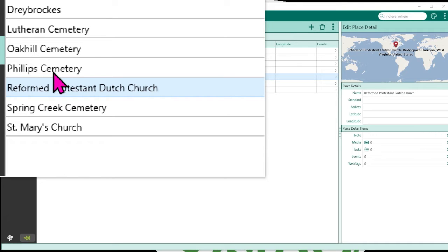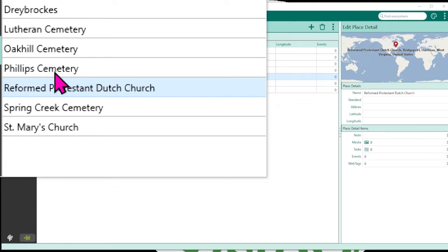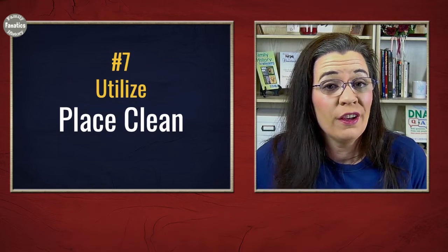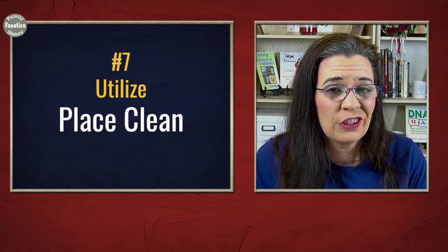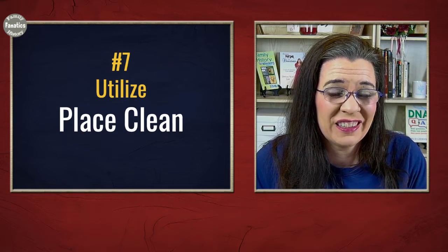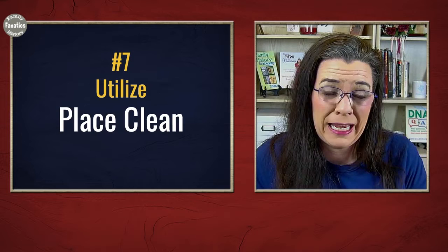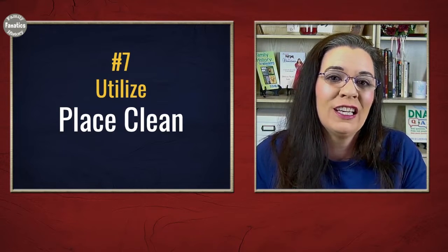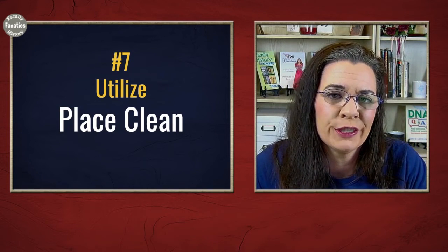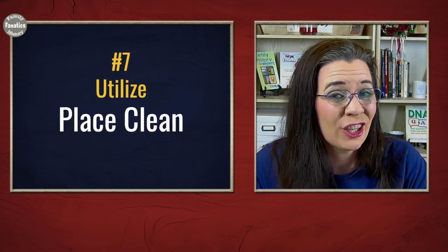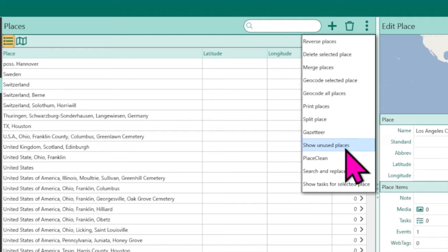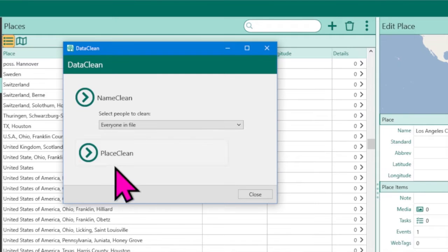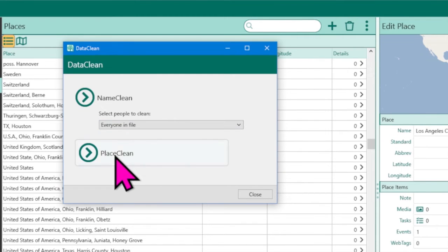If that went too fast, be sure to use the speed controls on YouTube to slow it down. While those tips are good to know when you just have a handful of things to clean up, there is one tool that can help you overhaul the mess you created in your locations in your family tree. It's called the Place Clean tool. Click the three dots, come down to Place Clean, and click on Place Clean.